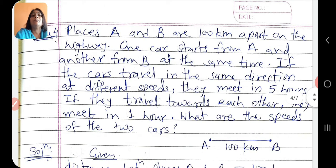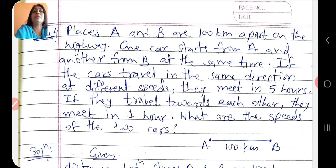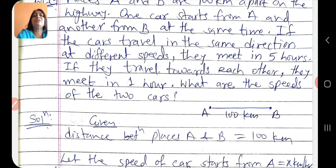Question number 4: places A and B are 100 km apart on a highway. One car starts from A and another from B at the same time. If the cars travel in the same direction at different speeds, they meet in 5 hours. If they travel towards each other, they meet in 1 hour. What are the speeds of the two cars? Question mein do places A and B hain jinke beech ka distance 100 km hai, aur dono places se ek ek car start ho rahi hai. Dono ki speed alag-alag hai. Same direction mein jayein to 5 hours mein milte hain, opposite direction mein jayein to 1 hour mein milte hain.